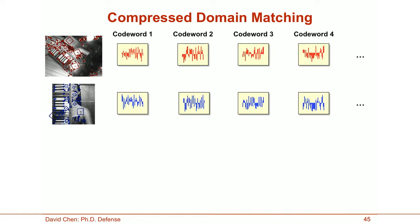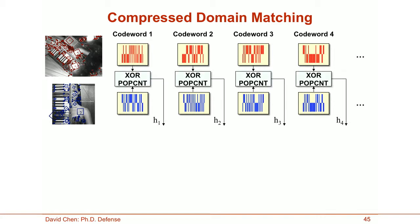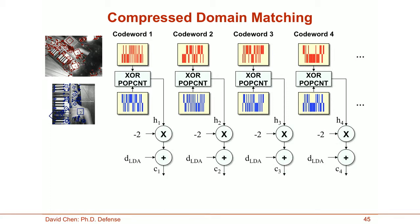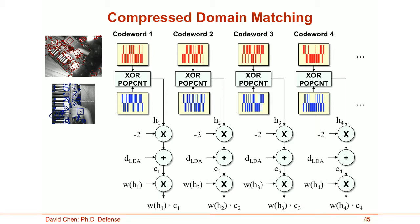After obtaining the LDA coefficients for each codeword, we binarize these LDA coefficients, resulting in a binary signature that is very compact to store in memory. The binary signatures can be compared directly in the compressed domain using XOR and popcount instructions, resulting in a set of Hamming distances. The Hamming distances can be equivalently converted into correlation values, which can be weighted, and finally the weighted correlation values are added together to form the overall image similarity measure.